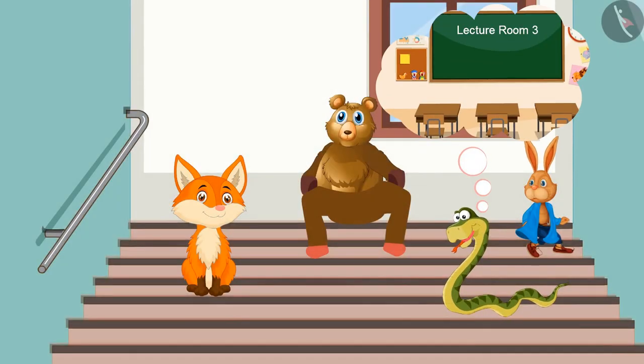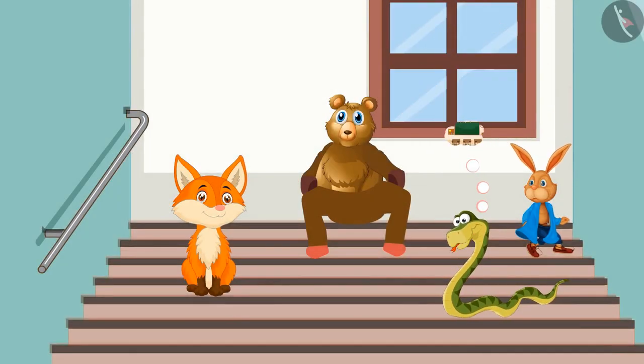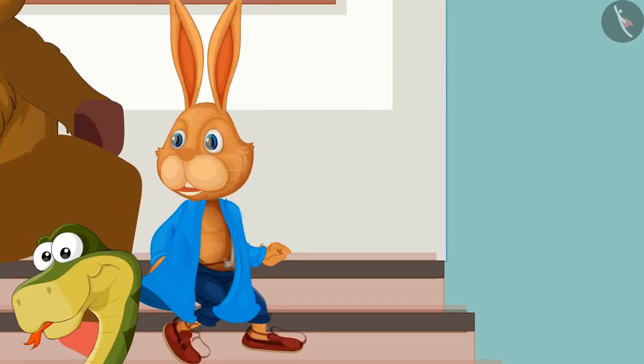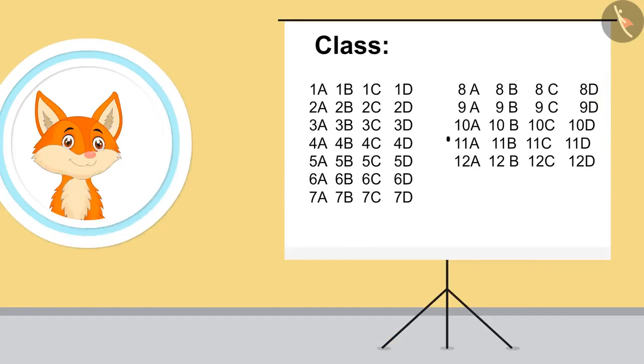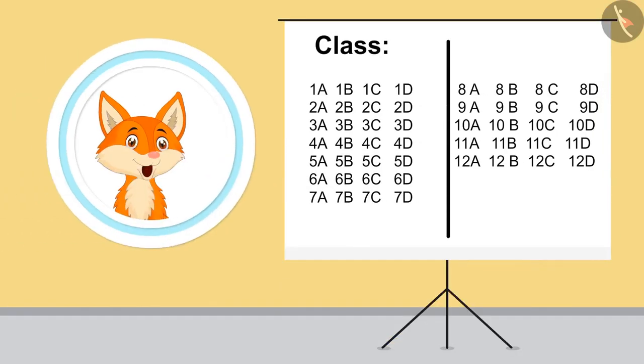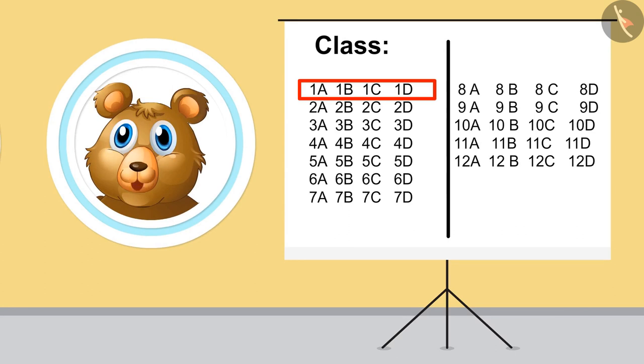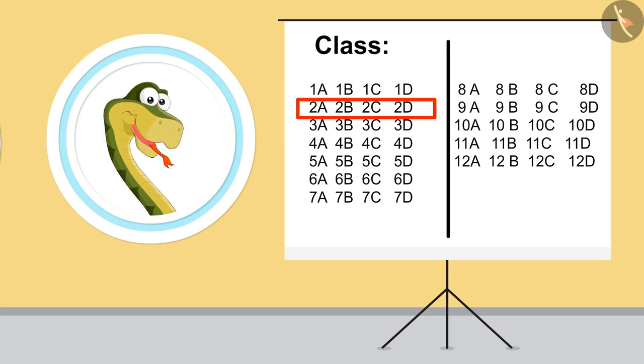Do you remember when we were in school, how our classes were named? Yes yes, 1A, 1B, 1C, and 1D. Then 2A, 2B, 2C, 2D. Yes, all classes are named like this with numbers and alphabets together.